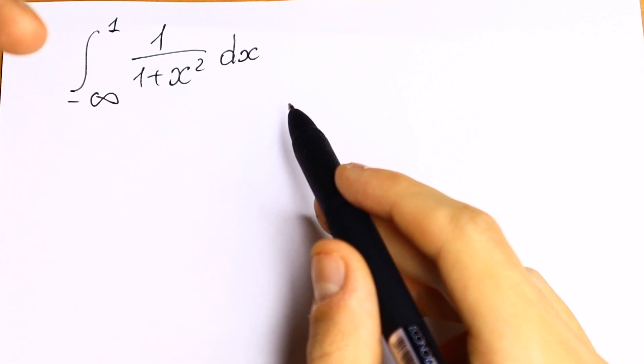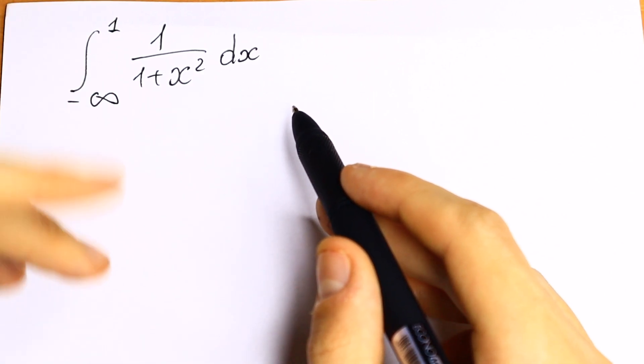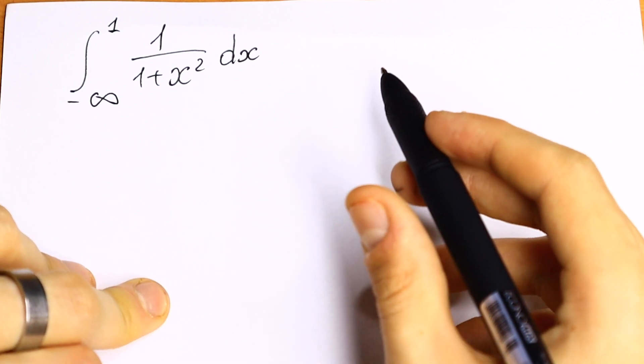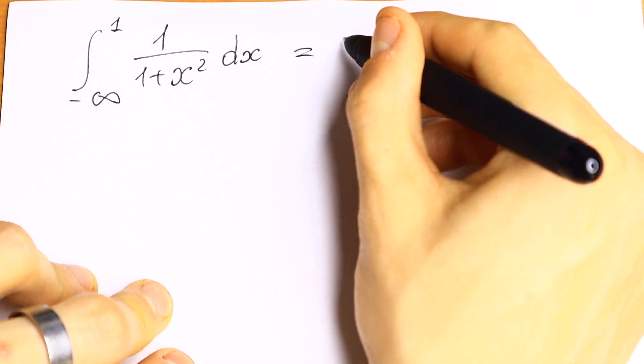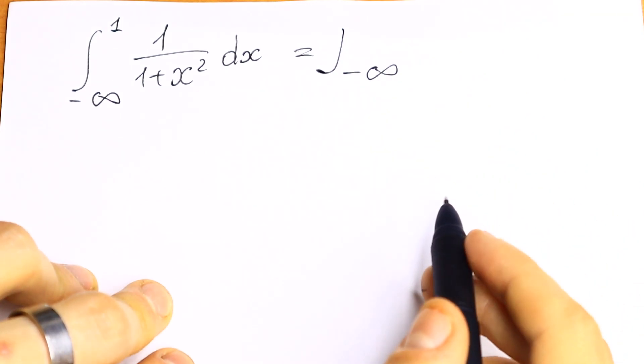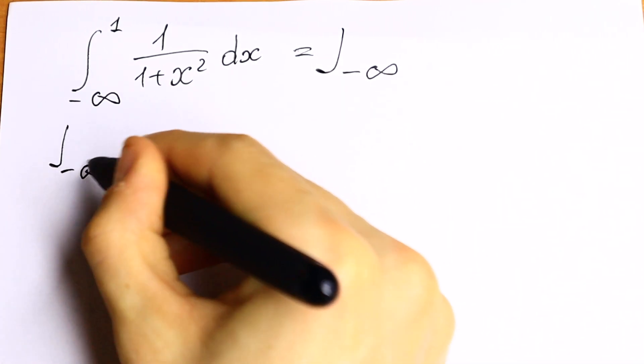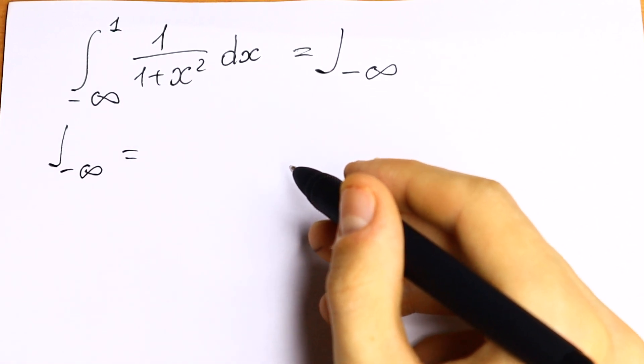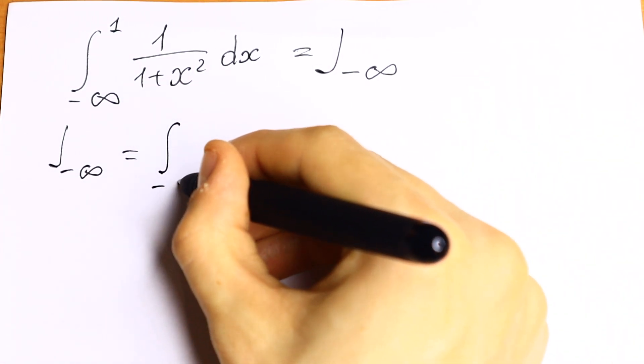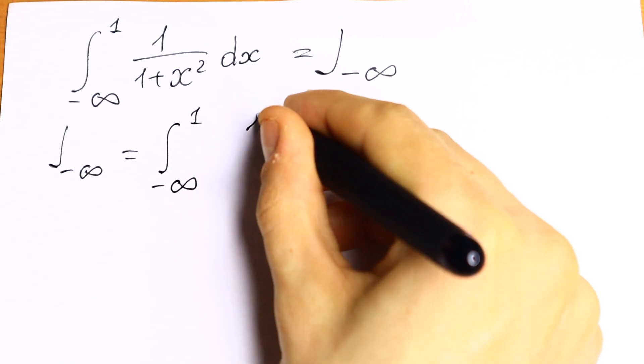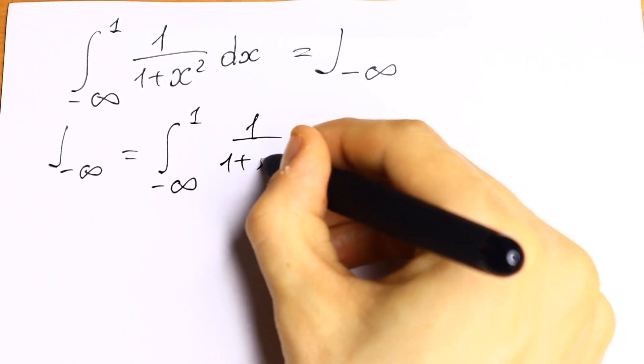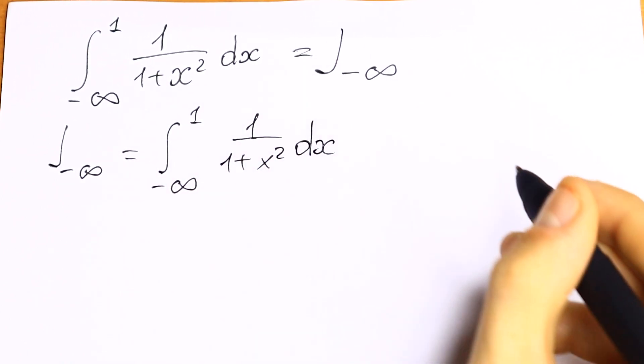Will this integral converge or diverge? So let's find information about this integral. This will be our integral from minus infinity to 1 of 1 over 1 plus x squared dx. This is our integral.